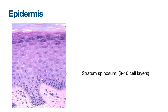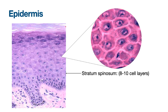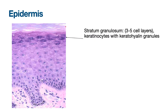The basal keratinocytes progressively differentiate and migrate toward the skin surface in a process called cornification. The next layer up is the stratum spinosum. The cells become more irregular and polyhedral in shape, with a spiny appearance due to a staining artifact that makes the desmosomes more apparent — hence the name. Dendritic cells are also found in this layer. As the keratinocytes continue to migrate and terminally differentiate, they start to produce keratohyalin, which aggregates into basophilic granules, giving the stratum granulosum its name.